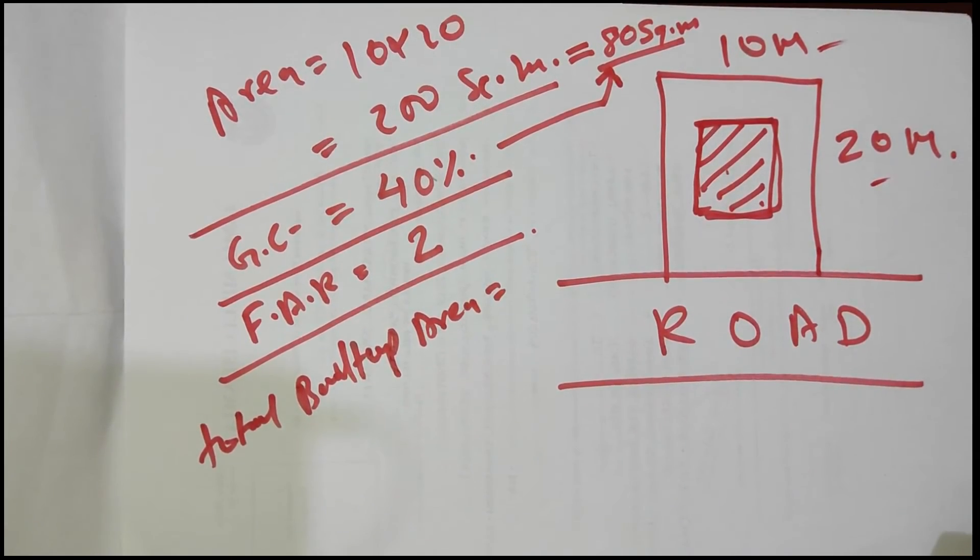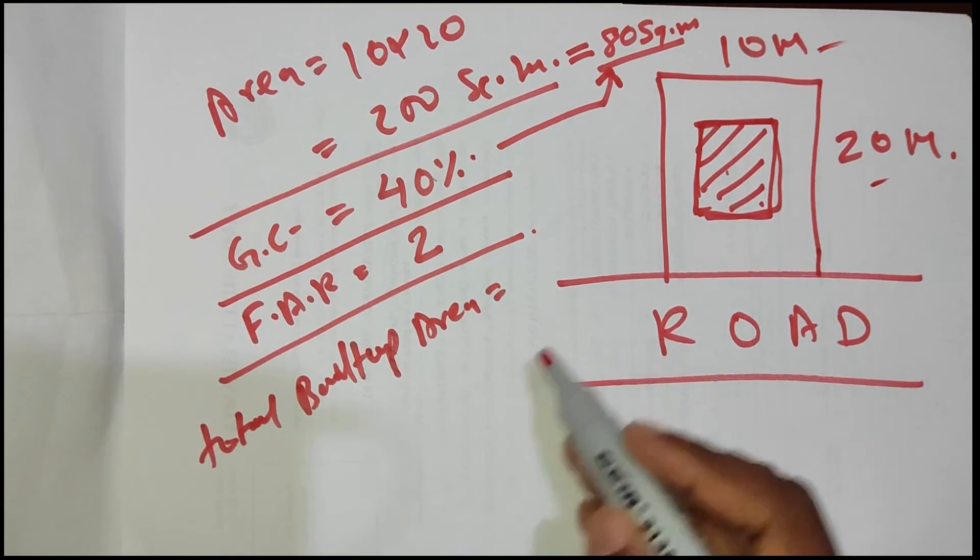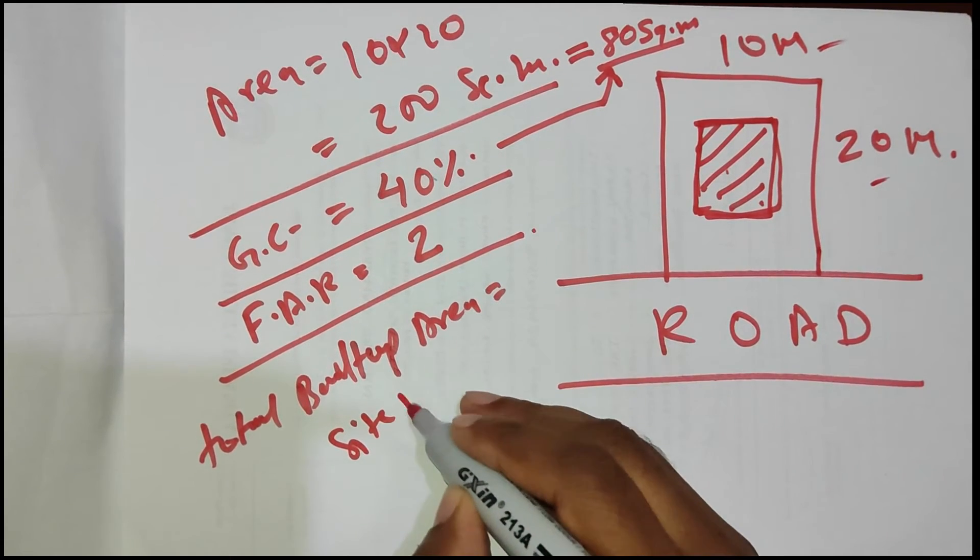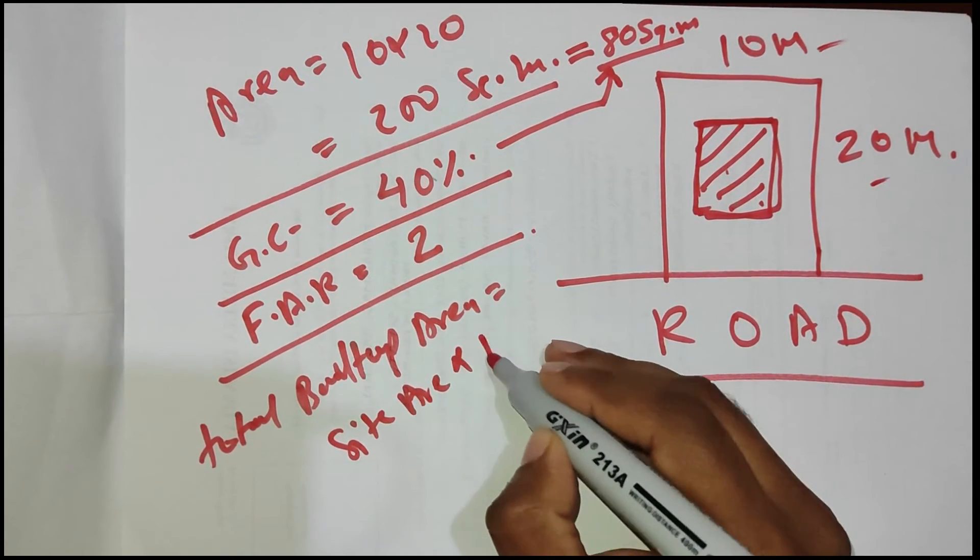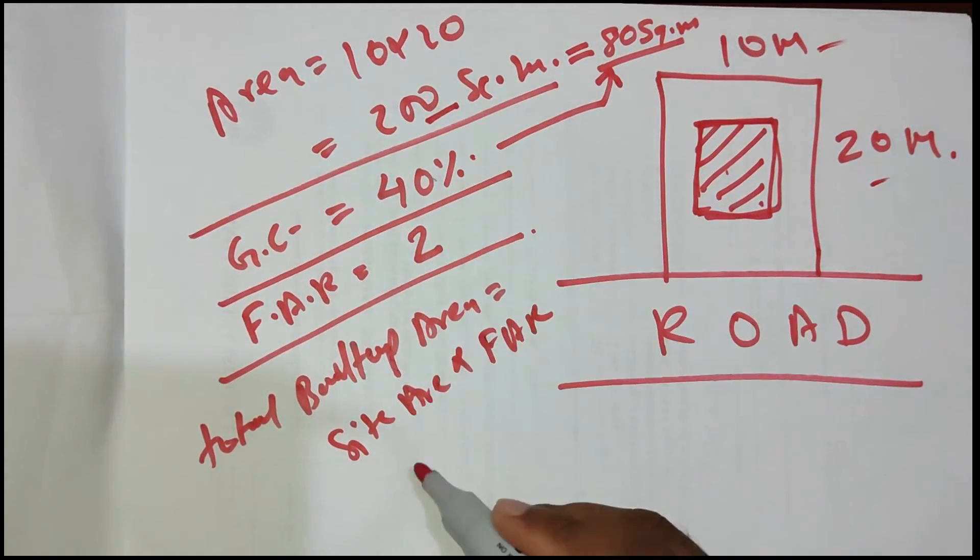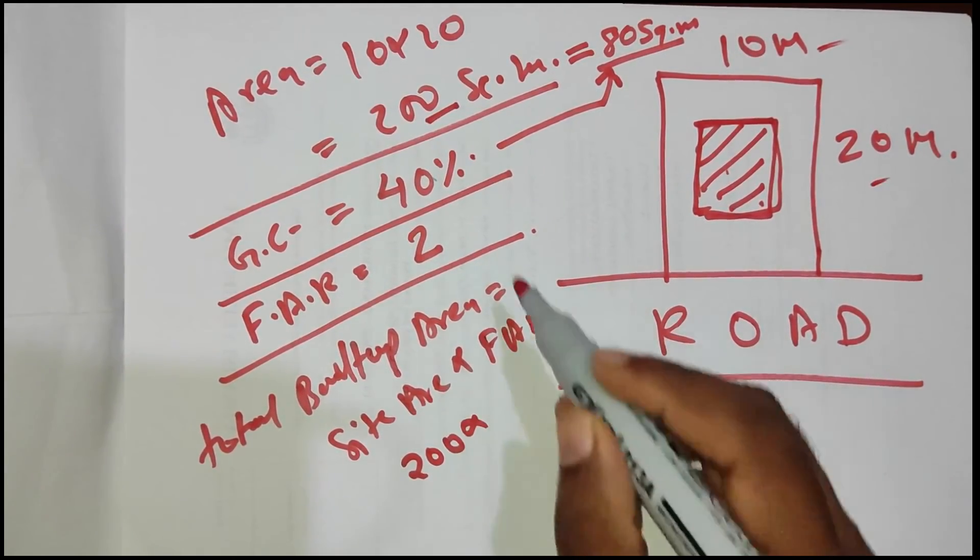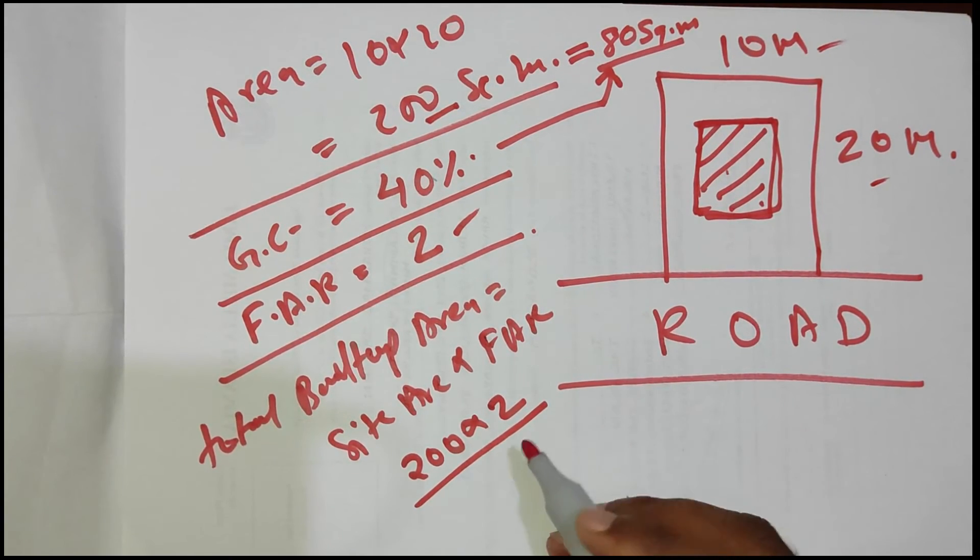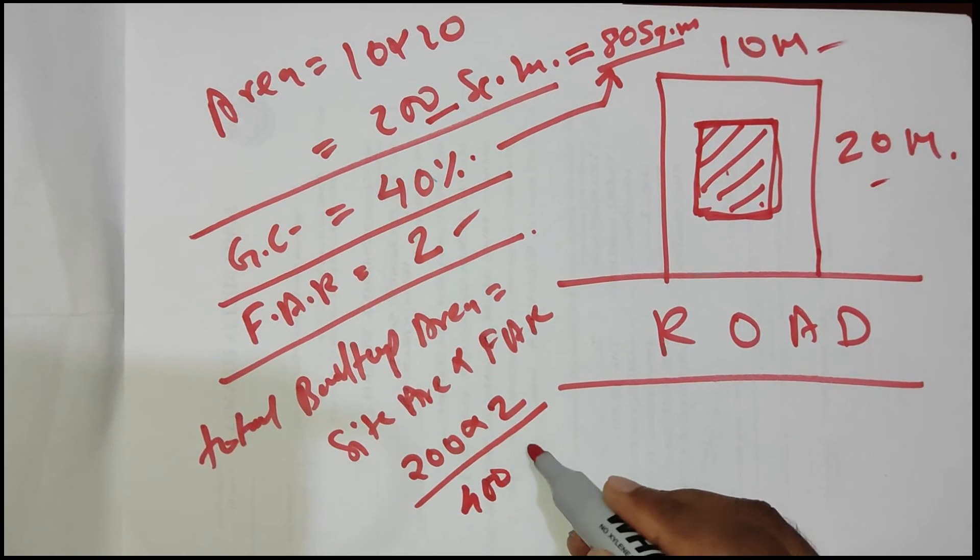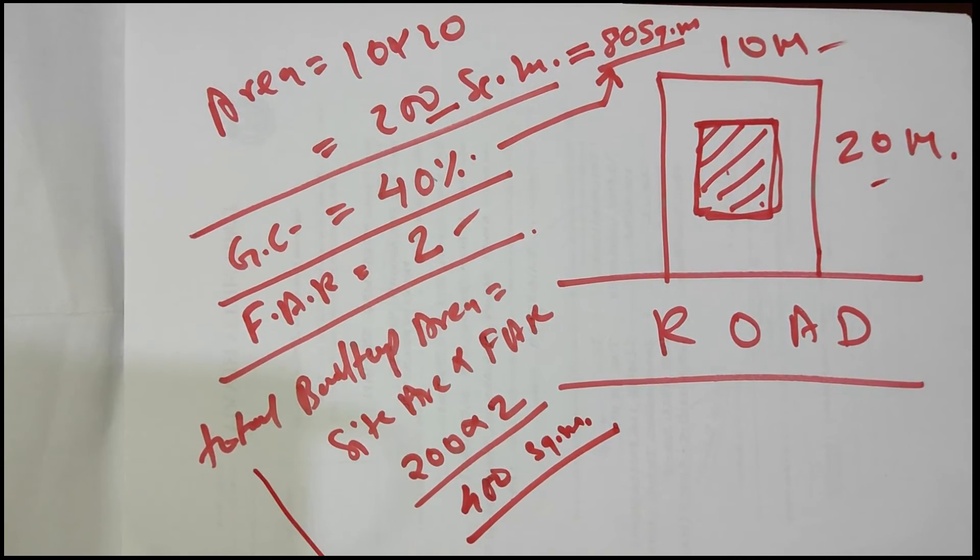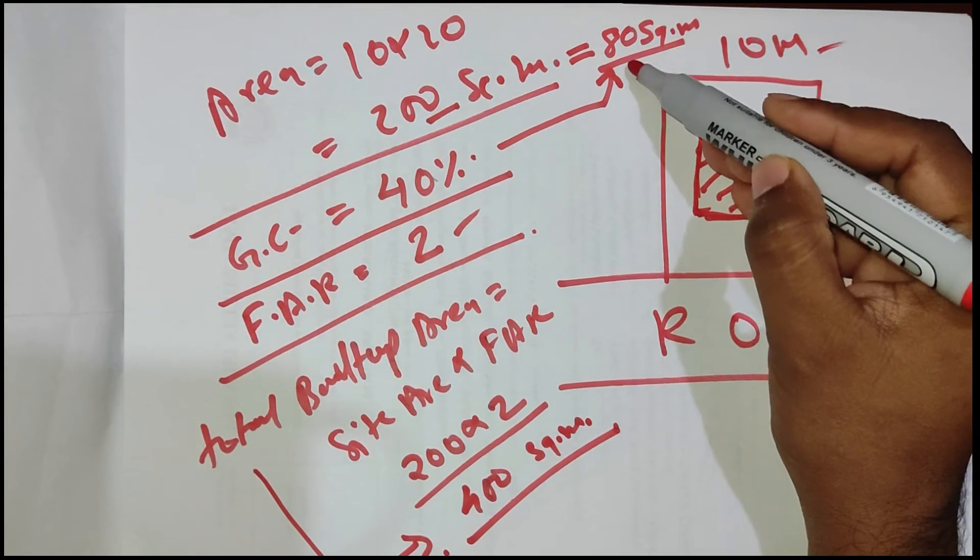Total built-up area is the multiplication of the site area by FAR. Here, the site area is 200 square meters and FAR is 2, so 2 multiplied by 200 equals 400 square meters. The total built-up area is 400 square meters.